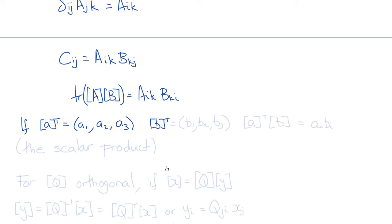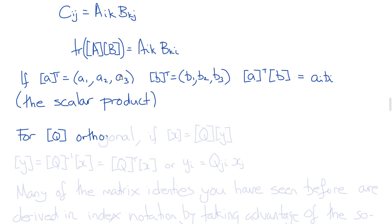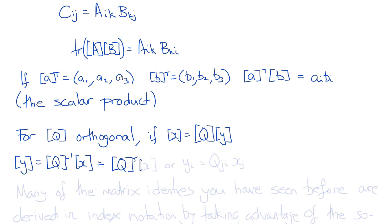If there are no free indices remaining, we have a scalar rather than a vector or matrix. For two column matrices a and b with components a1, a2, a3 and b1, b2, b3, the product a^T·b is the scalar product ai·bi = a1b1 + a2b2 + a3b3. If Q is orthogonal and Q·y = x, then y = Q^{-1}x = Q^T·x, or in index notation yi = Qji·xj. Notice the summed index is the first index of Q, because this is Q^T times x, not Q times x.